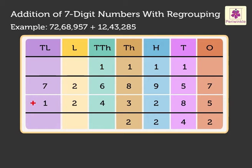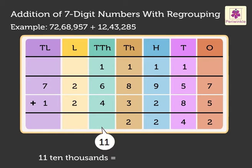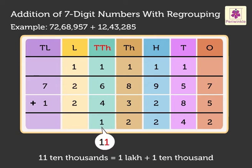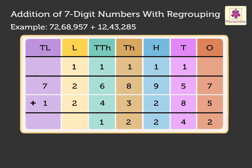Now, 1 plus 6 plus 4 equals 11. Regroup the 11 ten-thousands to 1 lakh and 1 ten-thousand. Carry the 1 lakh to the lakhs column and write 1 in the ten-thousands column.